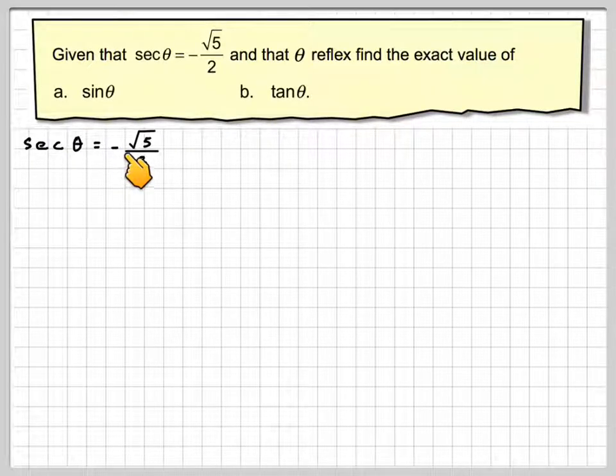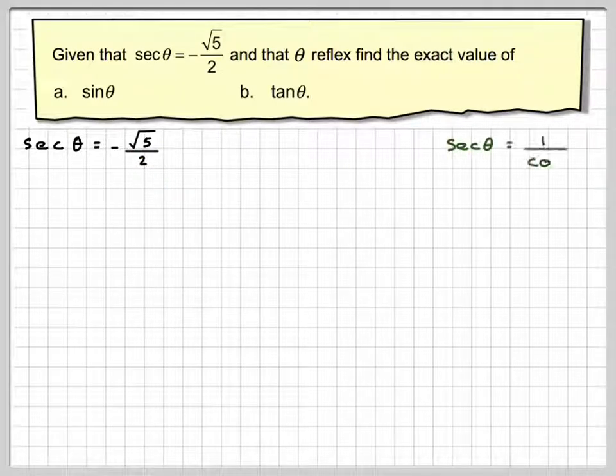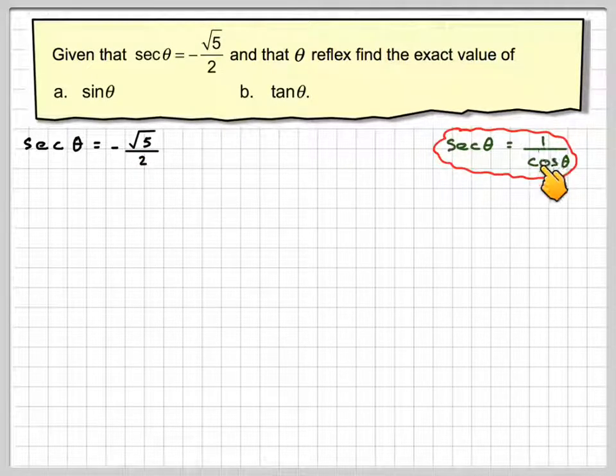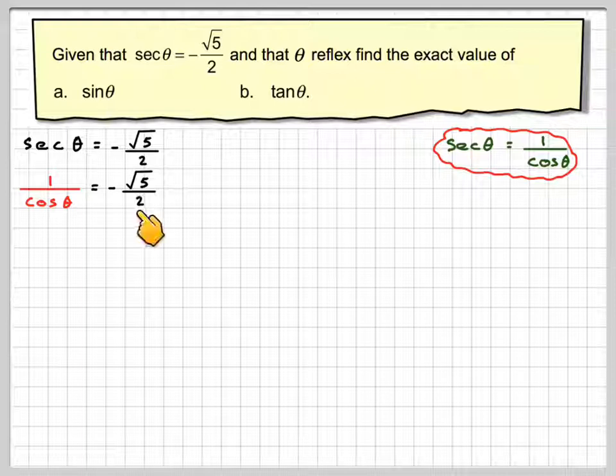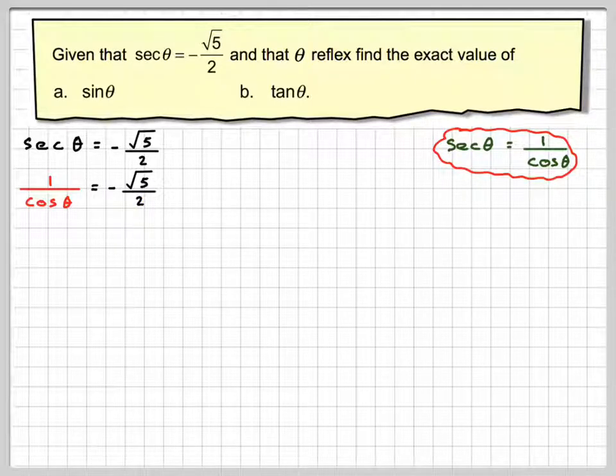Okay, sec θ is going to be equal to minus root 5 over 2. And then we know that sec θ is 1 over cos, so we'll replace sec θ with 1 over cos θ. It's still equal to minus root 5 over 2.